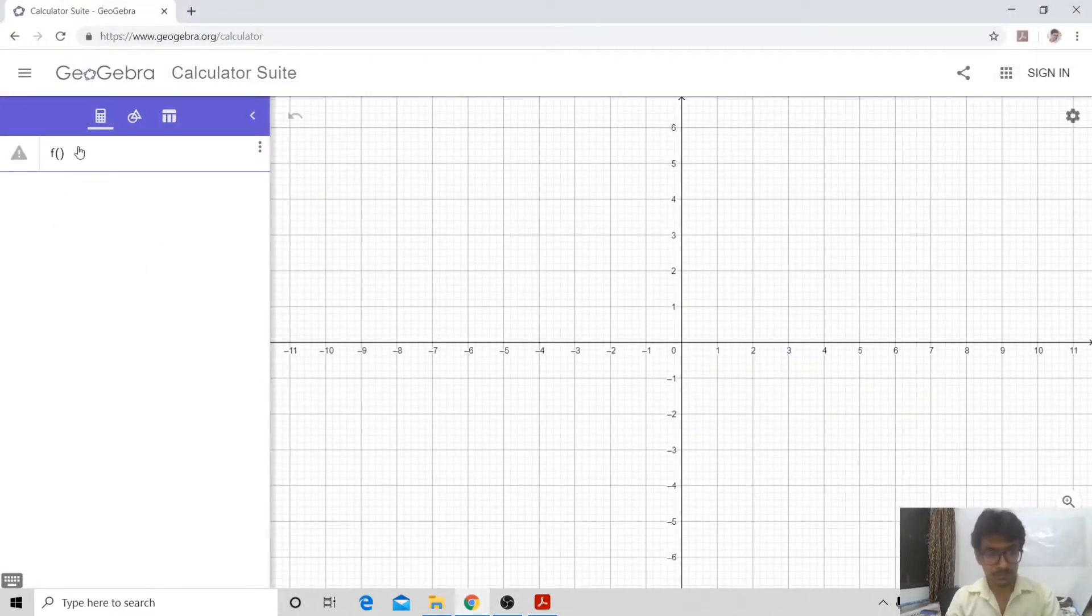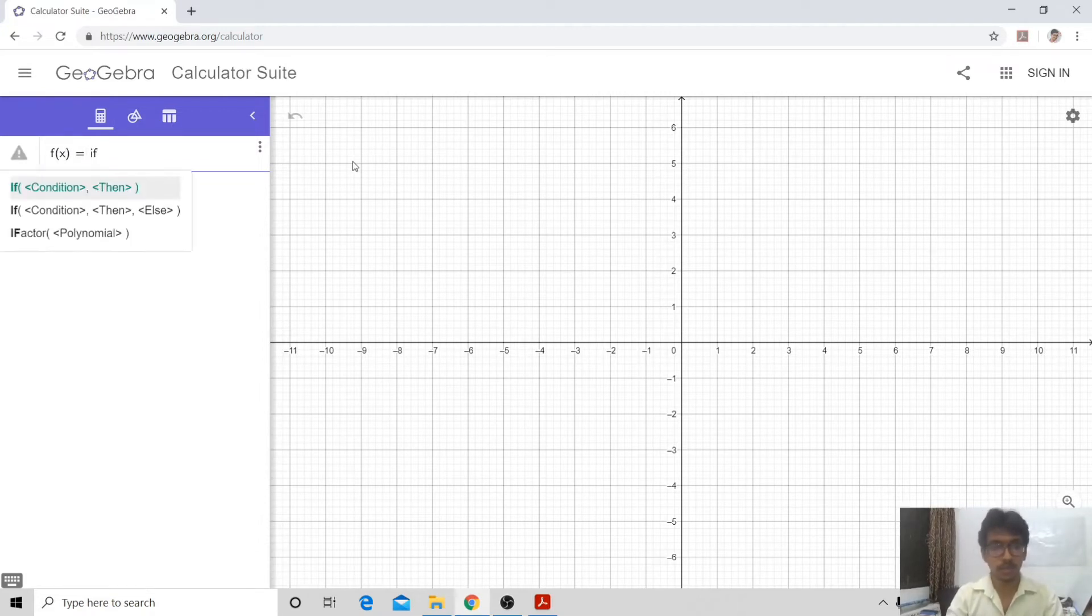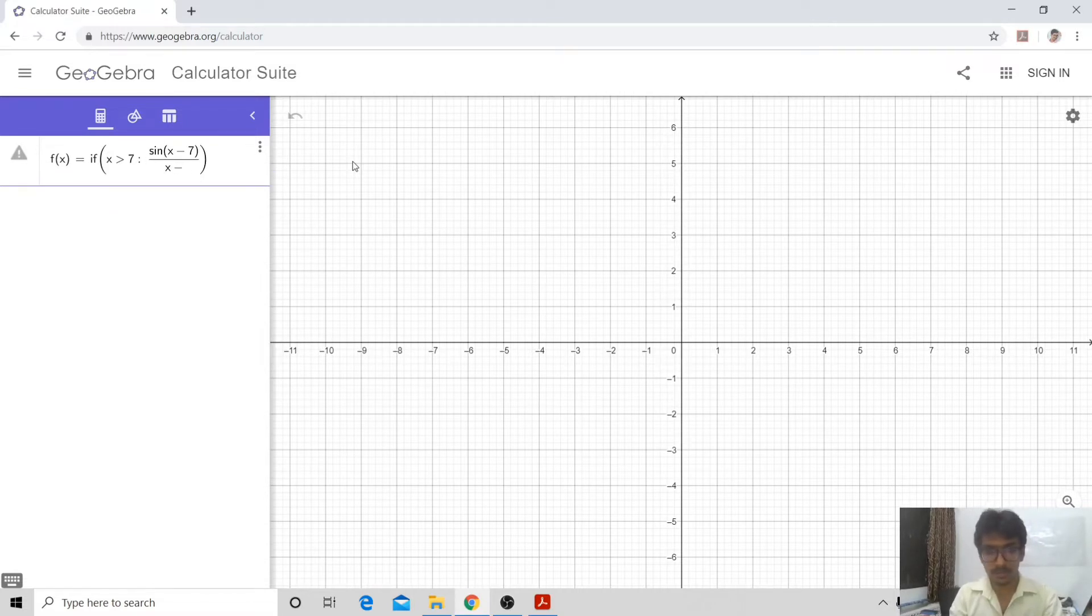I am using GeoGebra tool to plot this. Since this is a piecewise function, I will have to specify the range first and then the value. I think I have made some mistake over here.